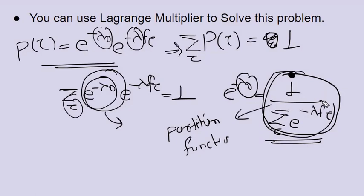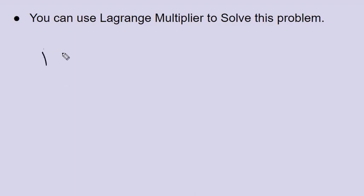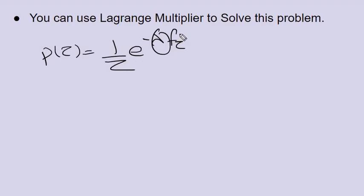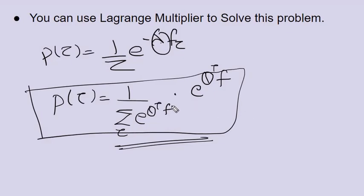Substituting lambda_0 as log Z, where Z is the partition function — the sum over all tau of e raised to lambda times f(tau) — we get: p(tau) = (1/Z) * exp(lambda·f(tau)). Substituting the learned lambda values back, the final form matches the paper's equation: p(tau) = (1/Z) * exp(theta^T · f(tau)), where Z = sum over tau of exp(theta^T · f(tau)). This is exactly the equation derived in the paper.